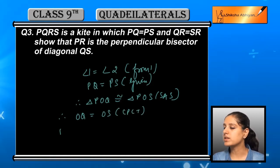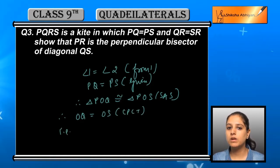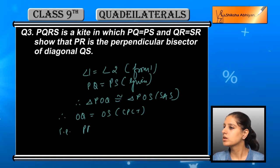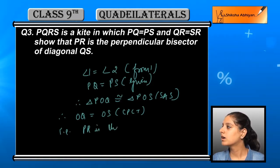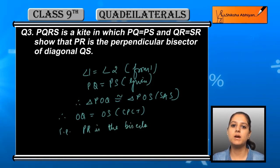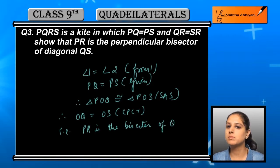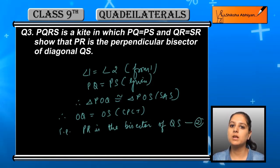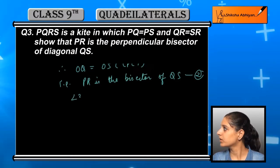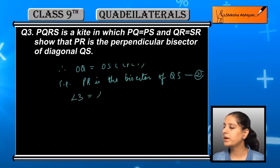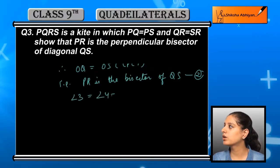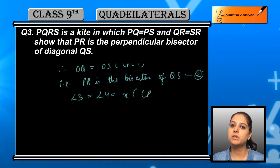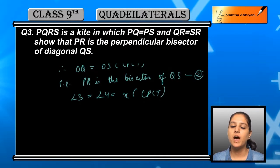Since OQ and OS are equal, that means PR is the bisector of diagonal QS. The meaning of bisector is that it divides QS into equal parts. Since OQ and OS are equal, it is dividing into equal parts. So PR is the bisector of QS. This is equation number 2.